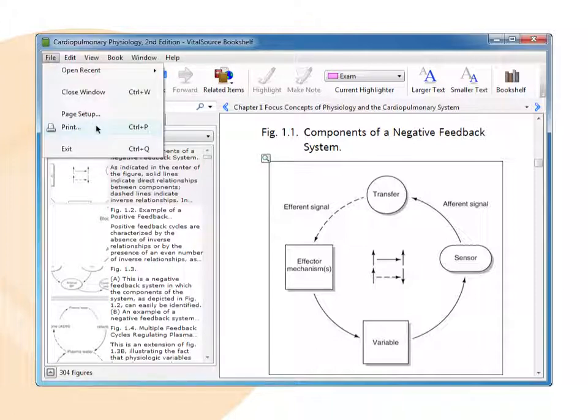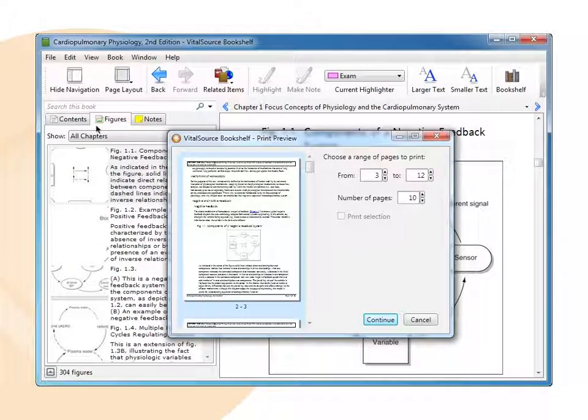To print, select File Print from the menu bar to display the print dialog box. Enter the range of pages you want to print.